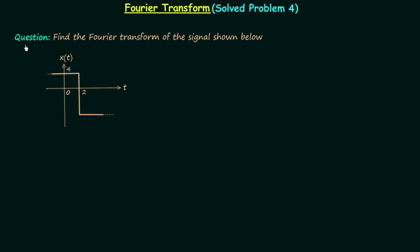In this question we need to find the Fourier transform of the signal whose waveform is shown here. The signal is XT and you can see signal XT is the combination of step signals. So we can use the method of differentiation — we will differentiate signal XT one time, and differentiating it one time will give us the waveform which is a combination of only impulses, and from that waveform we can easily calculate the Fourier transform of signal XT.